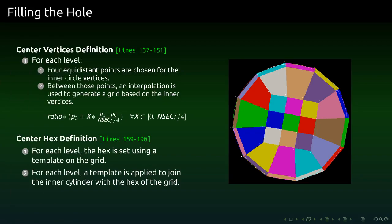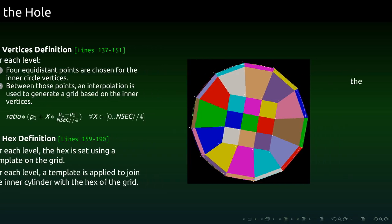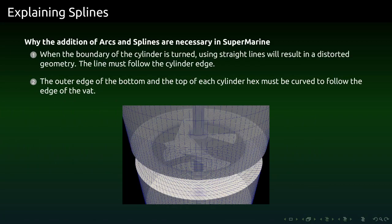After defining the outer cylinder, we have to define the center, the little square pieces at the center. To do so, we will create a grid, a grid which is based on four points of the inner circle. Those points are interpolated, then a grid is created with that. The grid is then used to create the hex, really simply.